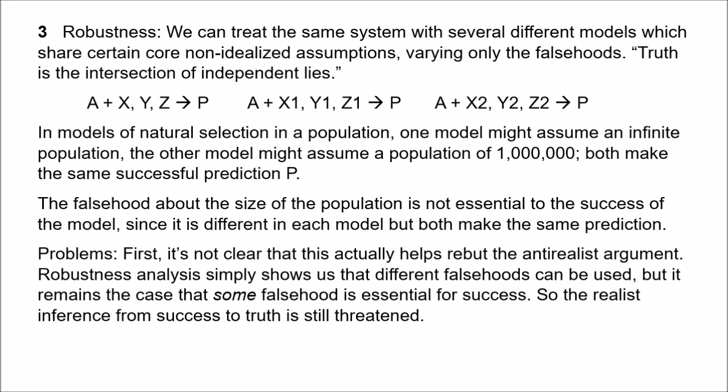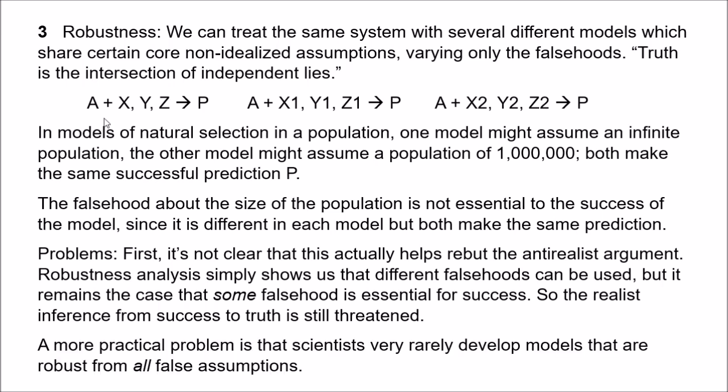Maybe I'm missing something. But a more practical problem is simply that scientists very rarely develop models that are robust from all false assumptions. A model will often include many, many falsehoods, and we may make a few other models with different falsehoods, but we'll still find that some falsehoods are shared between all models. We never really have the very clean situation where we just have a certain shared core of supposedly non-idealised assumptions with all of the falsehoods being different in different models.